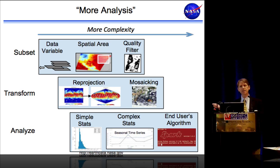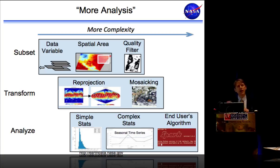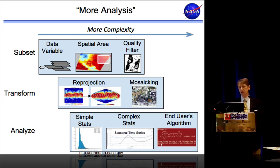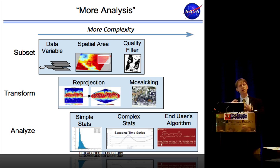This set of analysis characteristics goes from a continuum of very simple statistics — like a histogram — to more complex statistics such as seasonal time series. Ultimately, what we'd eventually like to get to is where the user can bring whatever their algorithm is. I'm showing a Spark console window as an example, though it doesn't need to be Spark — there are a number of different ways we might make that happen. That gives us the ultimate complexity and capability we'd like to enable for end users.